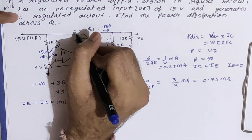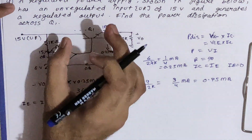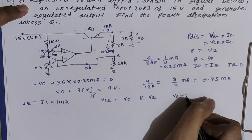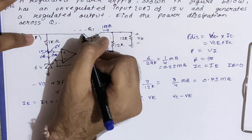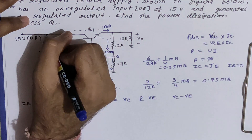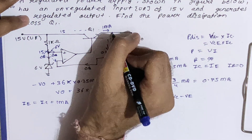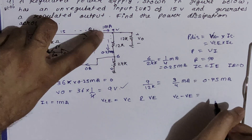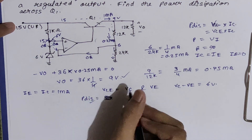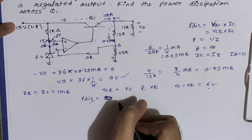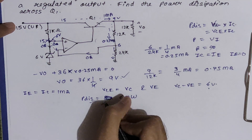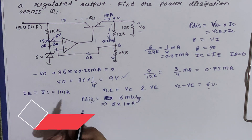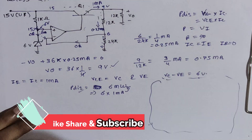Now we find Vce. The collector terminal is connected to 15V, and the emitter is at Vo = 9V, so Vce = 15 - 9 = 6V. Power dissipation = Vce × Ic = 6V × 1 mA = 6 mW. So the answer for power dissipation across Q1 is 6 mW.